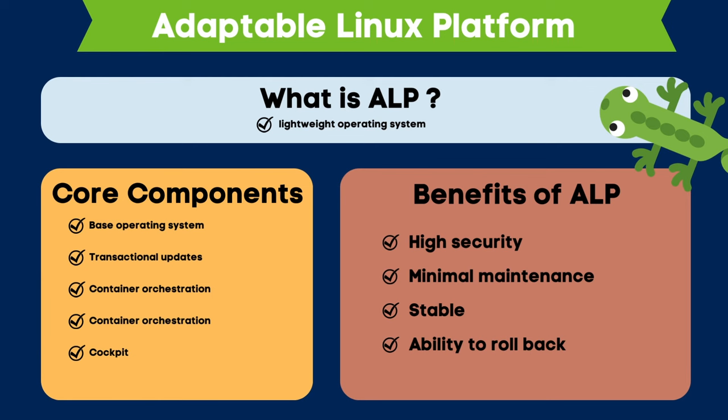The demand for specialized server platforms has led to an explosion of immutable operating systems designed to manage massive containerized workloads while improving security. Leading Linux vendors such as Red Hat, Canonical, and others have pounced on the market with their solutions, including CoreOS, Fedora Silverblue, and Ubuntu Core. SUSE, for its part, has also developed an offering: SUSE Linux Enterprise Micro and OpenSUSE MicroOS.